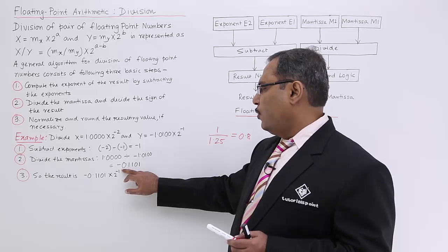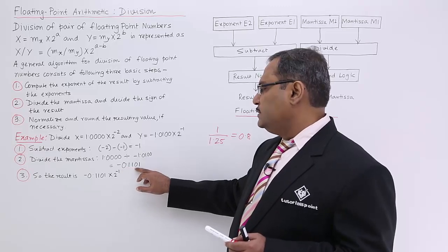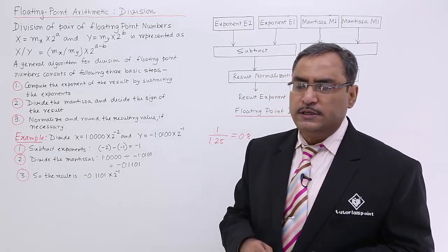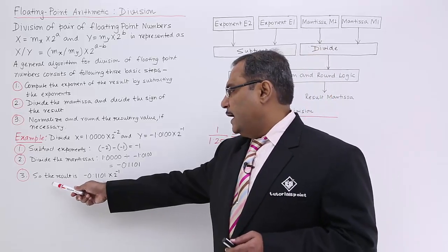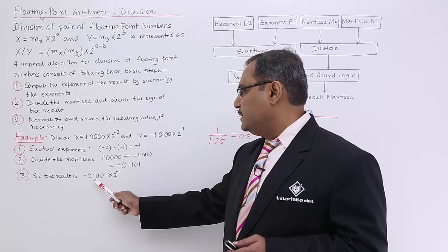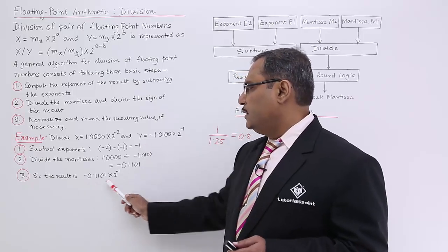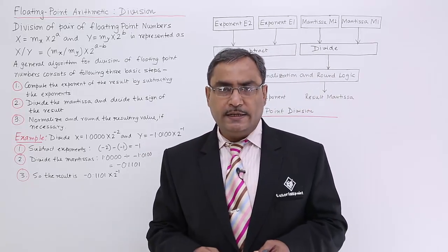So after rounding I am making it 0.1101. So that is the mantissa of the result, and so the result is I am taking this mantissa and taking this exponent. There is the result as desired.